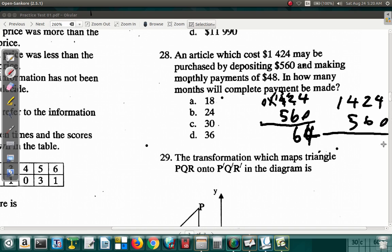2 minus 6 you can't. Borrow 1 from this leave 3. It's 12. 12 minus 6 is 6. This is 3 minus 5 you can't. Borrow 1 from this is 0. 3, 5, 6, 7, 8, 9, 10, 11, 12, 13. 864. So we have 864 dollars left to pay.